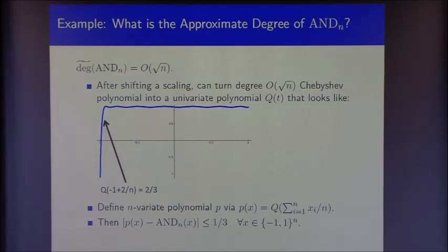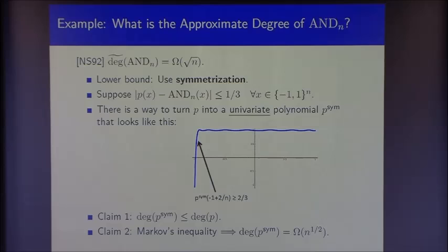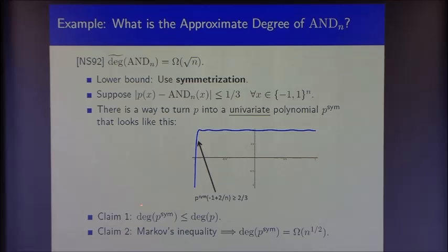For the lower bound argument of Nisan and Szegedy, the technique is called symmetrization. Suppose we had an n-variate approximation to the AND function, call it p. Symmetrization turns this n-variate polynomial into a univariate polynomial p_sym, and argues that the univariate polynomial has to look like a function with a big jump near -1. Crucially, this map is degree non-increasing — the degree of p_sym is at most the degree of p. Markov's inequality then says that because p_sym has a large jump and stays bounded in the unit interval, p_sym must have degree at least √n, and therefore p does as well.